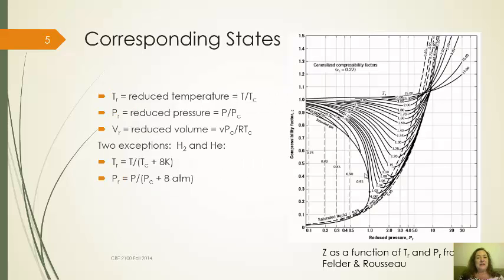We've seen this before when we did compressibility factors. This is the chart of compressibility factor versus reduced temperature and reduced pressure. This particular one is taken from the textbook by Felder and Rousseau for material and energy balances. TR is the temperature divided by the critical temperature using absolute temperature, and the reduced pressure is the pressure divided by the critical pressure using absolute pressure.